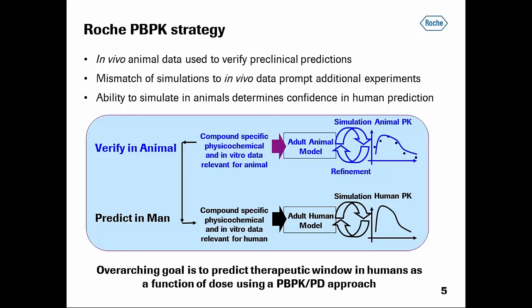Solubility is slightly higher in biorelevant media for the fasted state, and further enhanced in fed-state simulated intestinal fluids. Solubility in the stomach was comparable to that measured in the fasted-state intestine. The predicted clinical efficacious dose for our compound was not high, being around 20 milligrams. We had used PBPK modeling with this molecule going right back to preclinical times, applying our usual strategy at Roche for first-in-human PK prediction, whereby we start with PBPK modeling in the animal species — usually the rat.